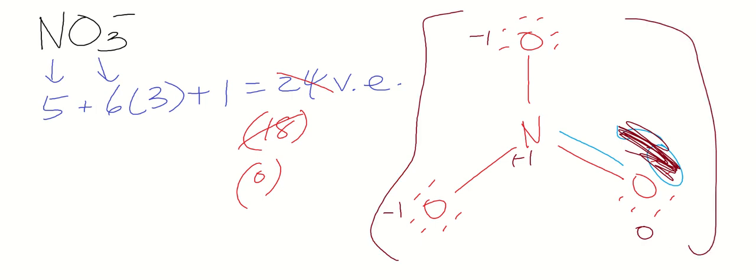Let's put brackets around this. And there's your one negative charge for that polyatomic ion.